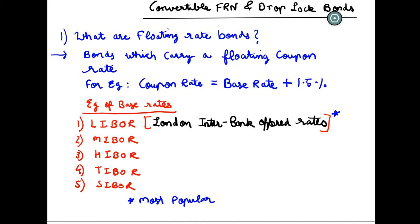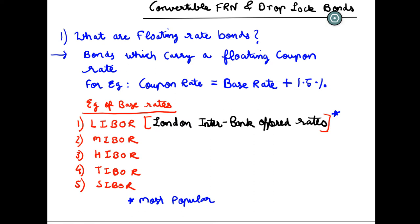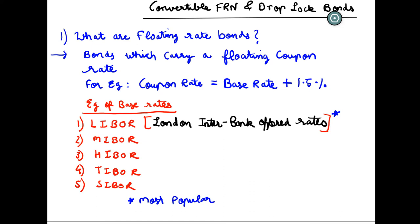These are interbank offered rates. LIBOR is the London Interbank Offered Rate — the most popular. MIBOR stands for Mumbai, used in India. HIBOR is the Hong Kong Interbank Offered Rate used in China. TIBOR is Tokyo, used in Japan. SIBOR is Singapore. LIBOR is calculated by asking the UK's leading 18 banks what rate they expect if borrowing from another bank; a trimmed mean of their quotes is taken and published by Thomson Reuters every business day.